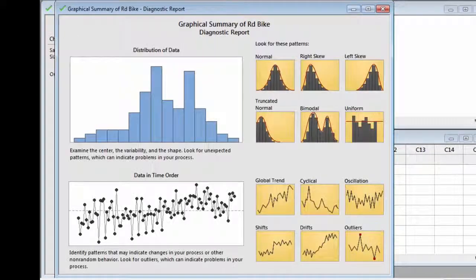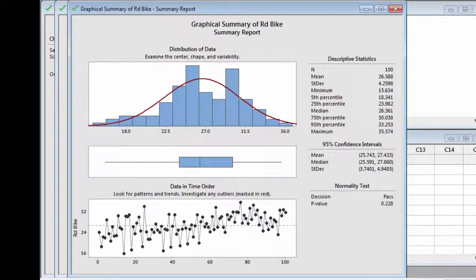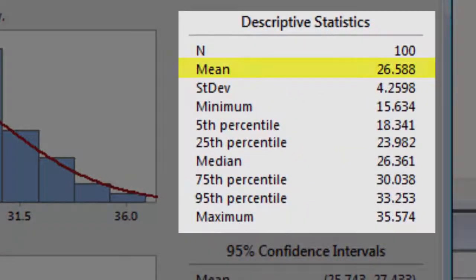The Assistant outputs a diagnostic report, a report card, and a summary report. The summary report shows that Joel's mean commute time is a bit over 26 minutes, good enough to reach the office on time. But the list of descriptive statistics reveals that the standard deviation is higher than 4 minutes.